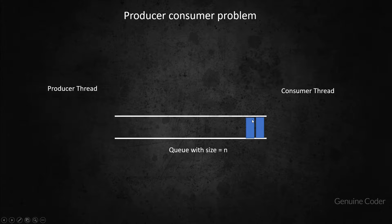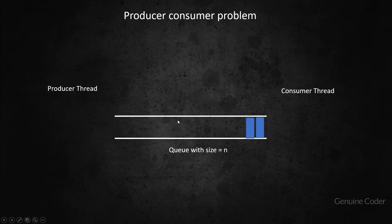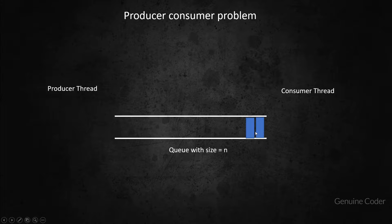For example, let us say the maximum size is two. Then the producer can't generate more data right now because the queue is filled. It has to wait until the consumer consumes at least one data.